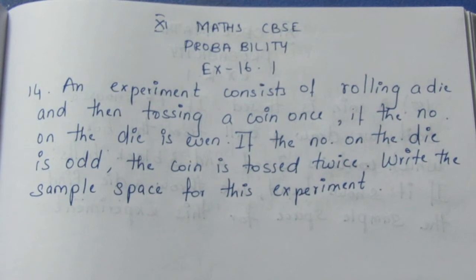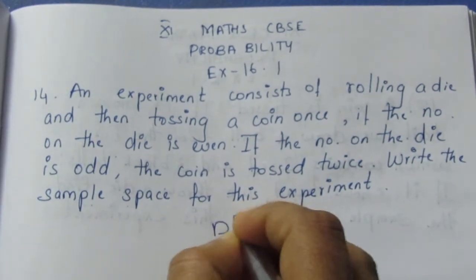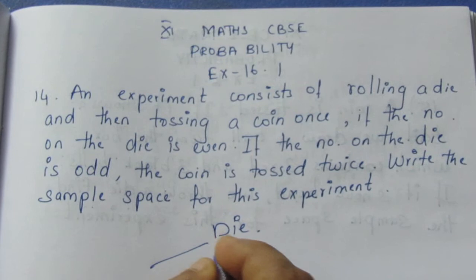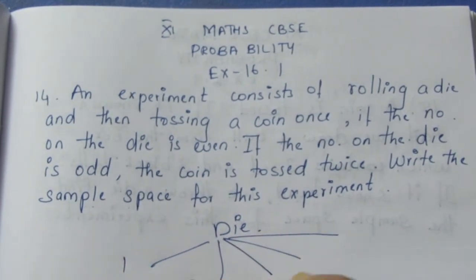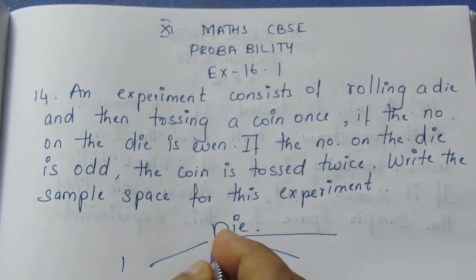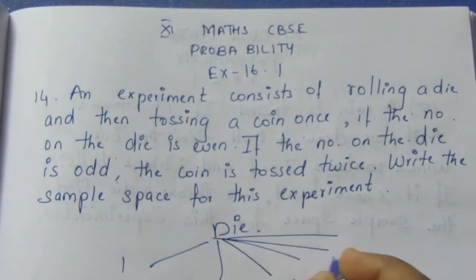If you want to write the sample space, you can say that first, die is rolled. If I put a flowchart, it will be easier for you. 1, 2, 3, 4, 5, 6.